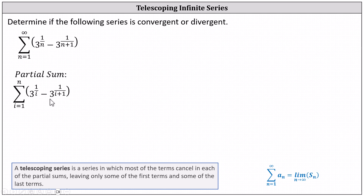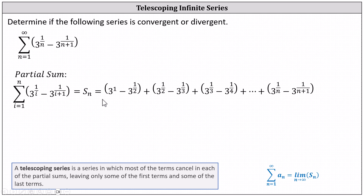Now we'll start to generate the terms in the series. First we have i equals 1, which gives us 3 to the first minus 3 to the power of 1 half. Then plus when i equals 2, we have 3 to the power of 1 half minus 3 to the power of 1 third. Plus when i is 3, we have 3 to the power of 1 third minus 3 to the power of 1 fourth, and so on.